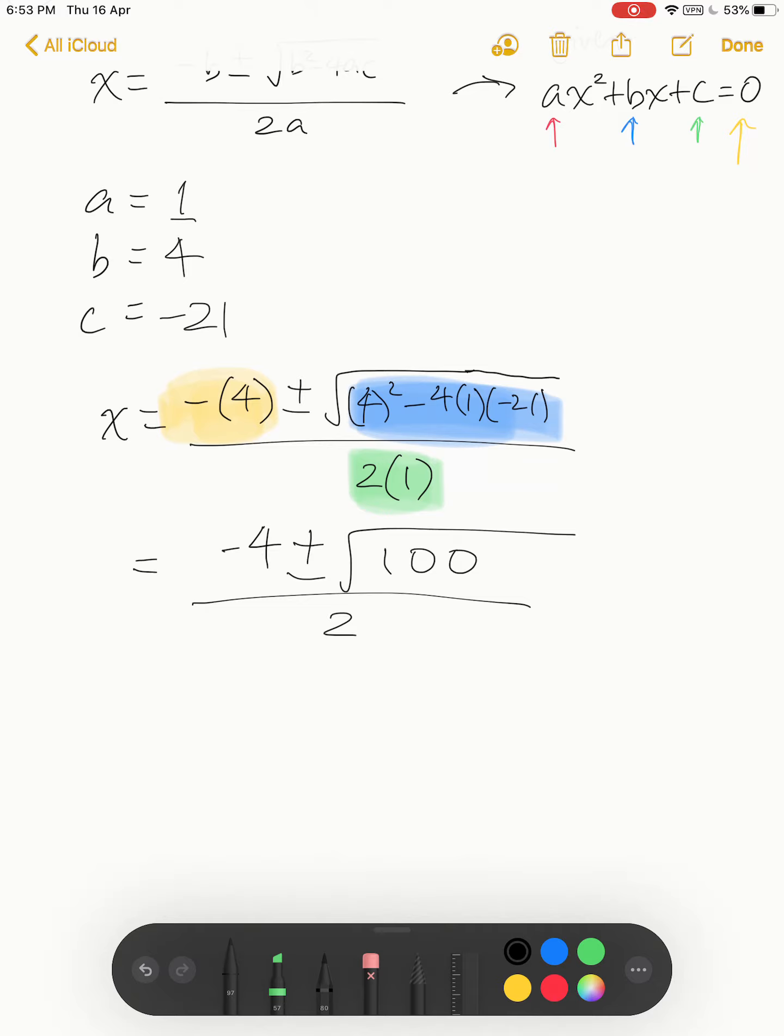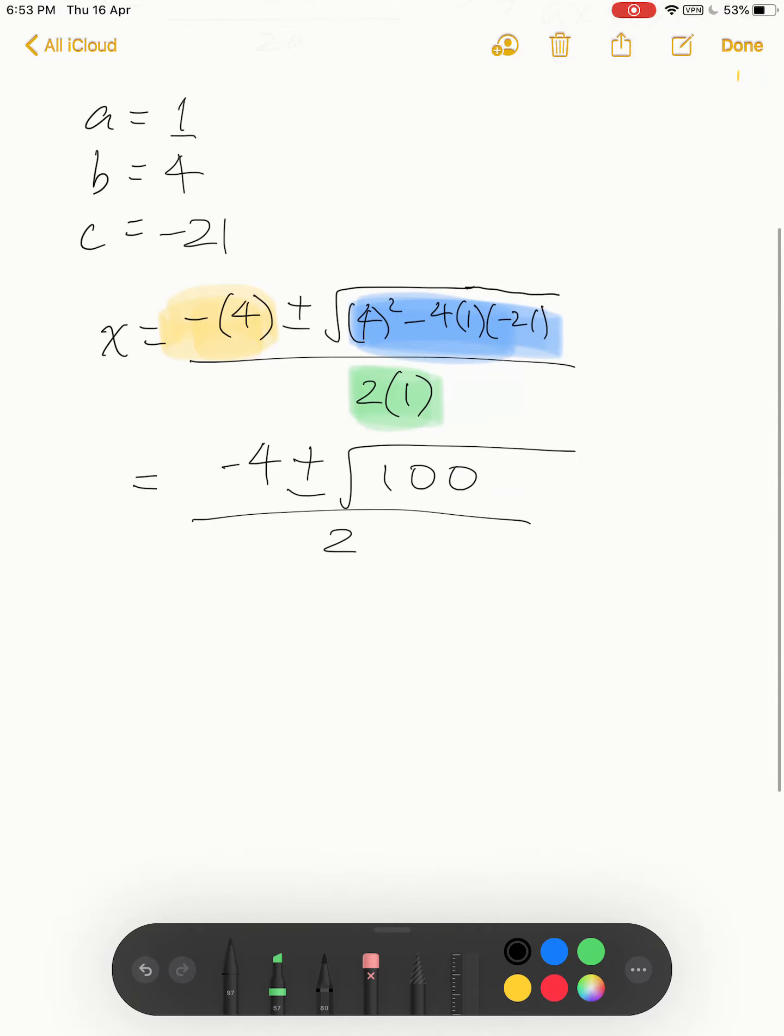From here you can key into your calculator. The calculator cannot do plus or minus, but you actually have two cases: x equals negative 4 plus square root of 100 over 2, or x equals negative 4 minus square root of 100 over 2.